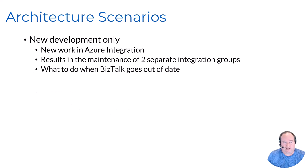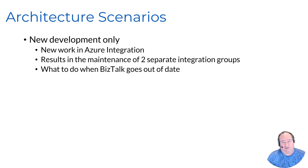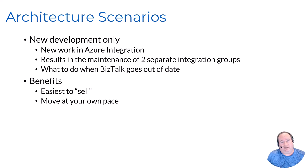Another architectural scenario is to do new development only in the cloud using Azure components, and slowly move your BizTalk solutions over as time sees fit. Eventually, though, you're going to run out of time with that BizTalk Server five years or so from now. It does result in maintaining two separate integration environments, but it gives you a way to start moving into things slowly. Generally this is the easiest option to sell to a client — it gets developers up to speed at their own pace and lets you move BizTalk services over as it makes sense.